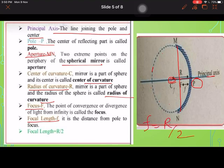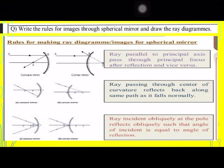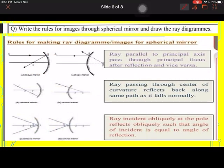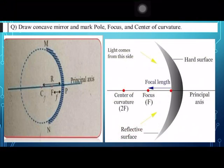First question: write the rules for images through spherical mirrors and draw the ray diagram. You have to write these rules also and you have to draw this diagram also for both concave and convex. Remember. Next is draw a concave mirror and mark pole, focus, and center of curvature.